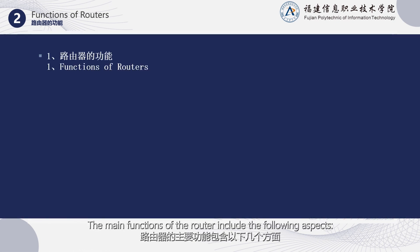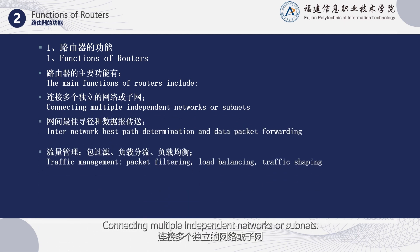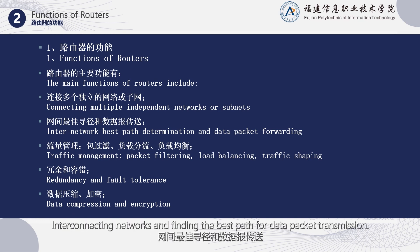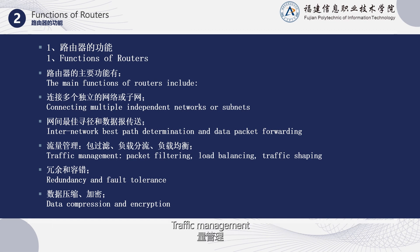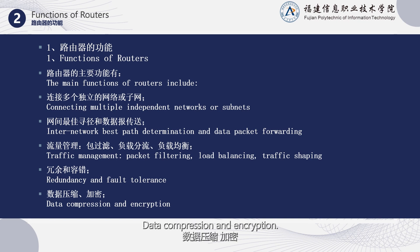The main functions of the router include the following aspects: connecting multiple independent networks or subnets; interconnecting networks and finding the best path for data packet transmission; traffic management, including packet filtering, load splitting, and load balancing; redundancy and fault tolerance; and data compression and encryption.